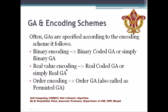Similarly, if we are using real value encoding, it will be called real coded GA or simply real GA. In the same way, if we are using order encoding, the genetic algorithm is called order GA or permuted GA, corresponding to order encoding or permuted encoding.